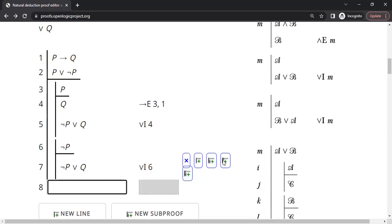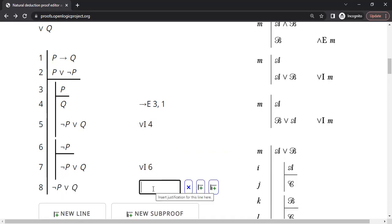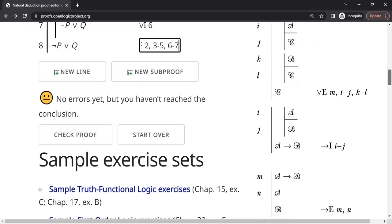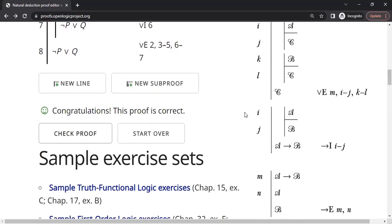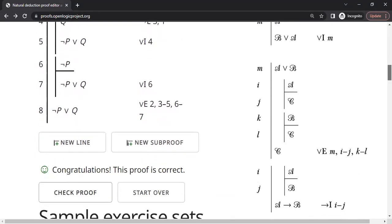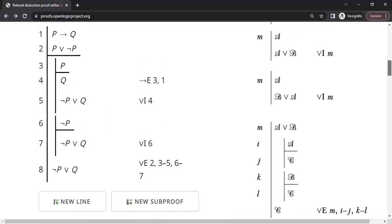So exactly the same logic we are going to apply here and add a new line to the parent of the proof to claim that it's same as NOT P or Q based on the OR elimination applied using line number 2, 3 through 5 and 6, 7. Okay. Let's check whether everything okay. Yeah. Everything is okay. So we are done. The proof is done. Congratulations. This proof is correct.